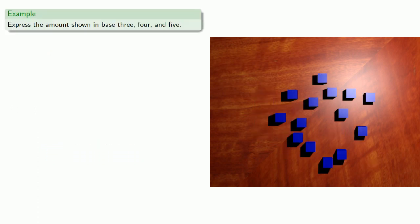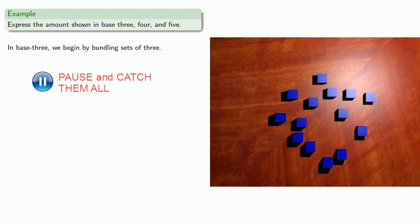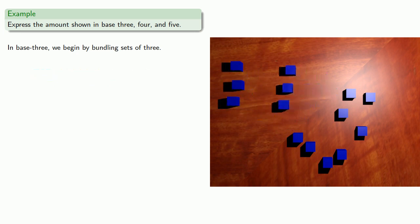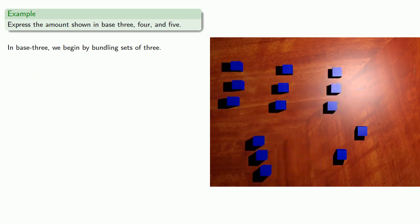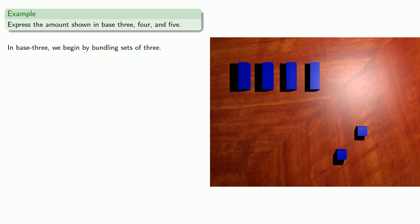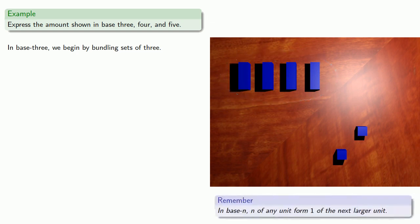So let's express the amount shown in base 3, 4, and 5. In base 3, we begin by bundling sets of 3. And so we have, well, actually, we have more than 3 of these sets of 3. And remember, in base n, n of any unit form 1 of the next larger unit. And since we have more than 3 of the sets of 3, we can bundle to form a larger unit.